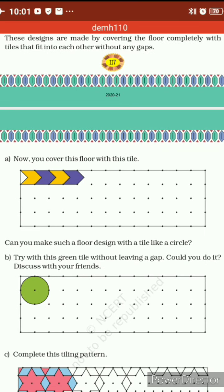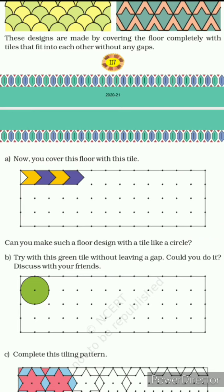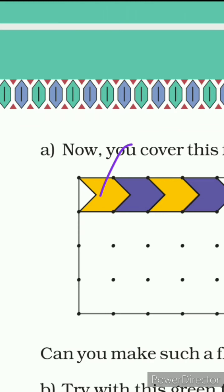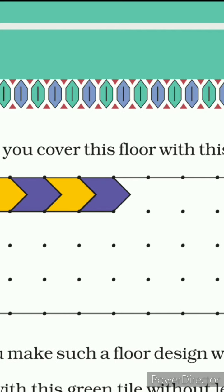This design is made by covering the floor completely with tiles that fit into each other without any gap. In tiles ko kuch aise adjust kiya jata hai ki ye aapke floor ko completely cover bhi kar lete hain, aur ek doosre mein bilkul fit bhi ho jate hain — kahi pe koi gap nahi raha hai. You have to cover this floor with the given tile.